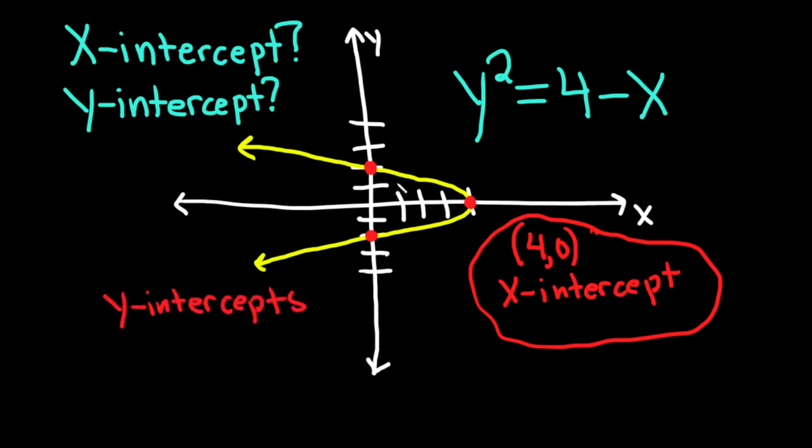So our first y-intercept would be (0,2) because you go right 0 and up 2. And the one on the bottom, well, you go right 0 or left 0. You're not really going right or left in any direction, but you're going down by 2. So it'll be (0,-2). These would be the y-intercepts.